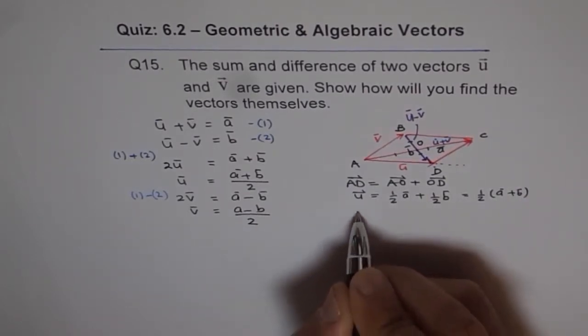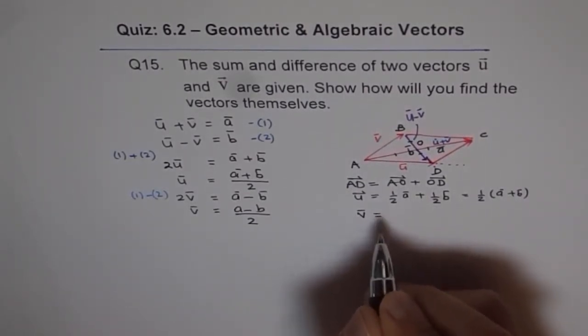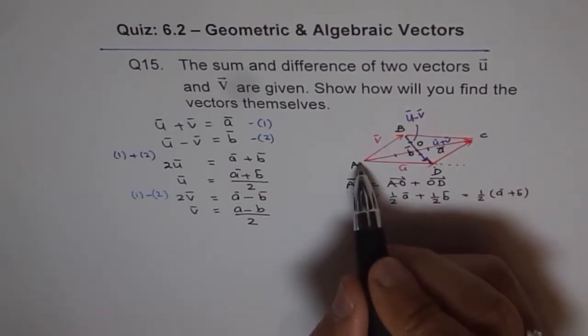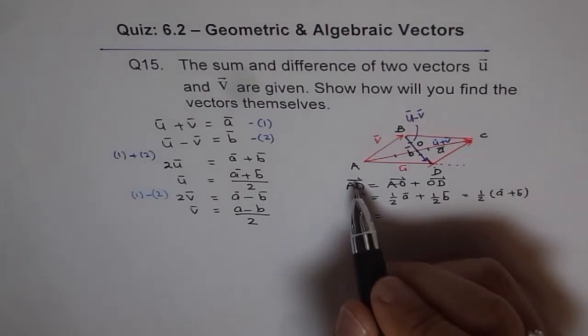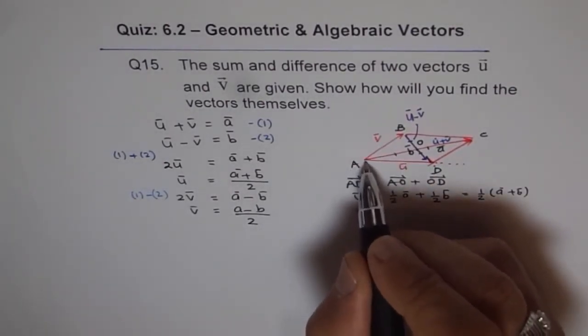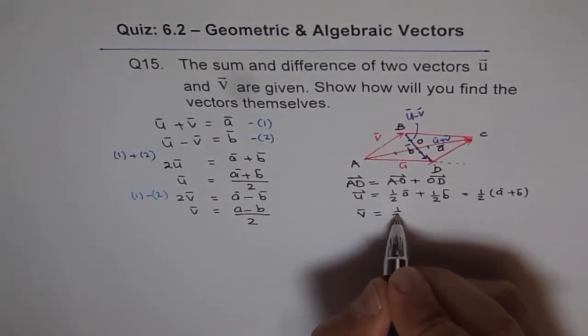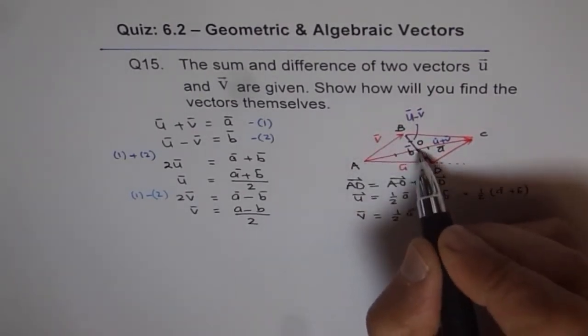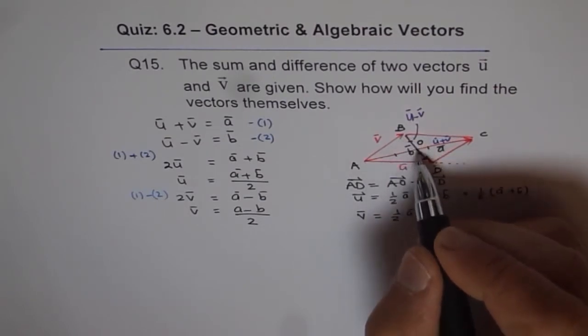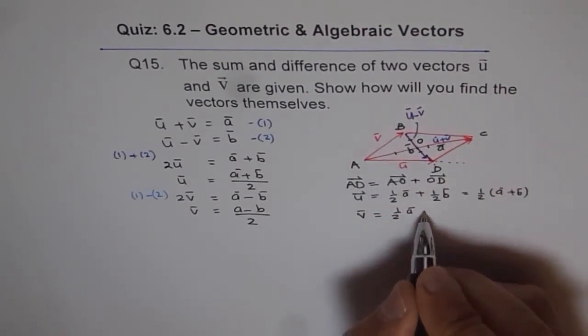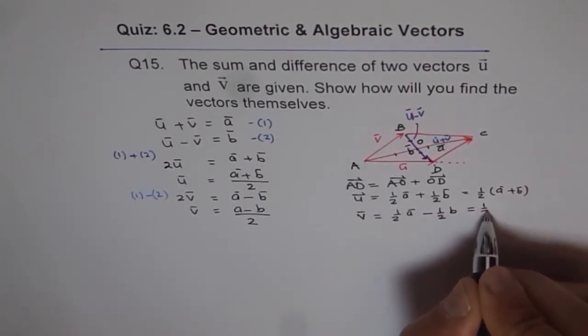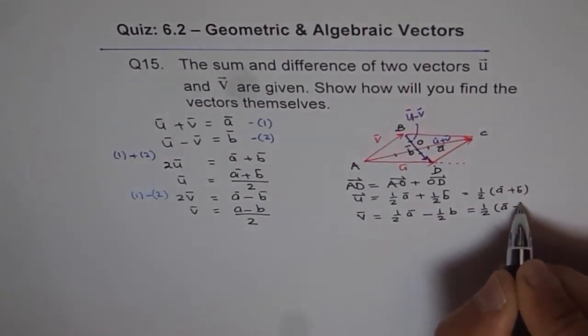Similarly, you can find what v is. This is your v. So v could be written as, do you see that? a o, which is half of a. And when you go backwards from here, reverse direction, o b. o b is half of b with a minus sign, so minus half of b. That equals half of a minus b.